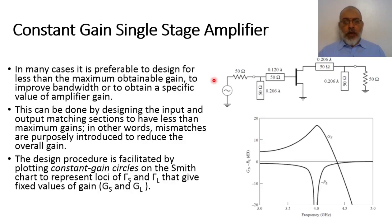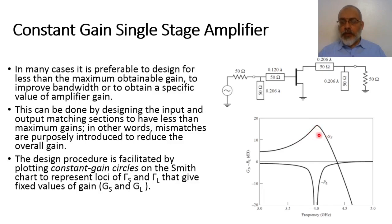Welcome everyone. In the previous video, we talked about how to design the maximum gain amplifier. We saw that for the maximum gain amplifier, we could obtain maximum gain at the design frequency and minimum reflection coefficient at this frequency. However, the main problem is that the gain varies fast with frequency, such that the bandwidth is very small. Similarly, the reflection coefficient bandwidth is very narrow. So the main disadvantage of the maximum gain amplifier is the narrow band operating characteristics.